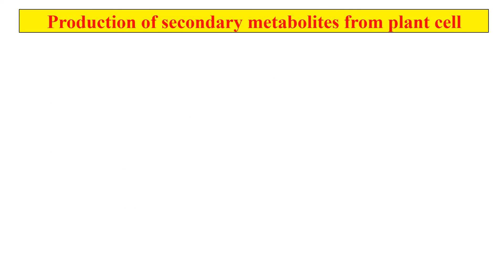Now, how and why should we produce secondary metabolites? Because these secondary metabolites are very useful. They can be used in many industries — like the perfume industry and in the case of insecticides. They have lots of uses which we will cover under the application portion. Since they are so important, we need to produce them. These are the steps involved in the production of secondary metabolites from the cell.